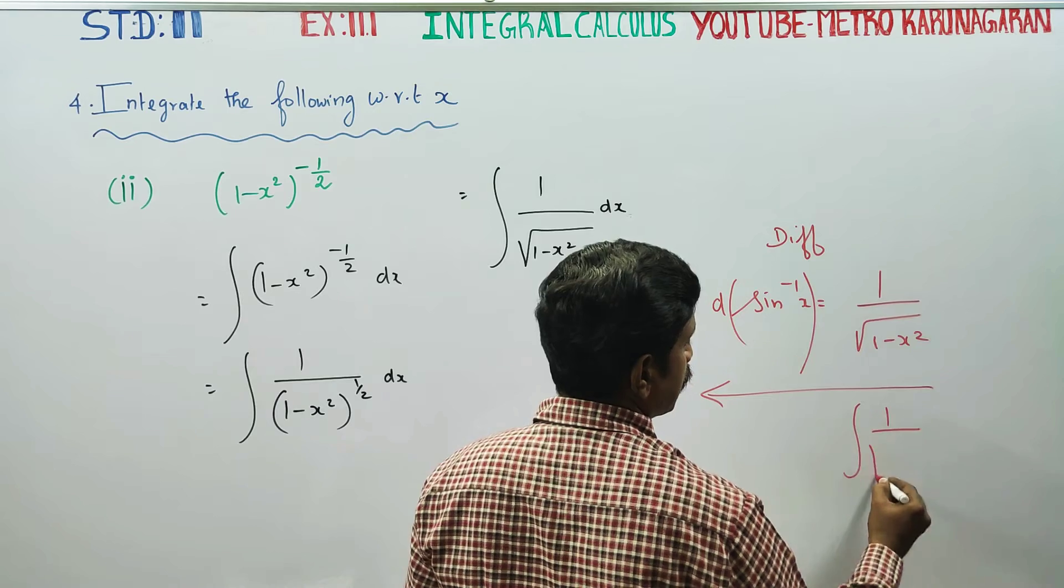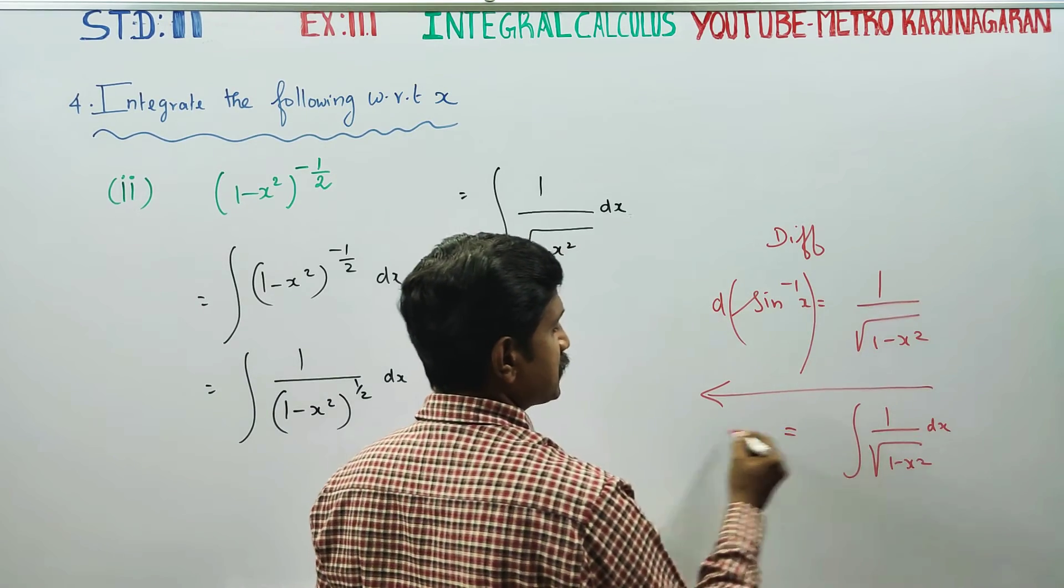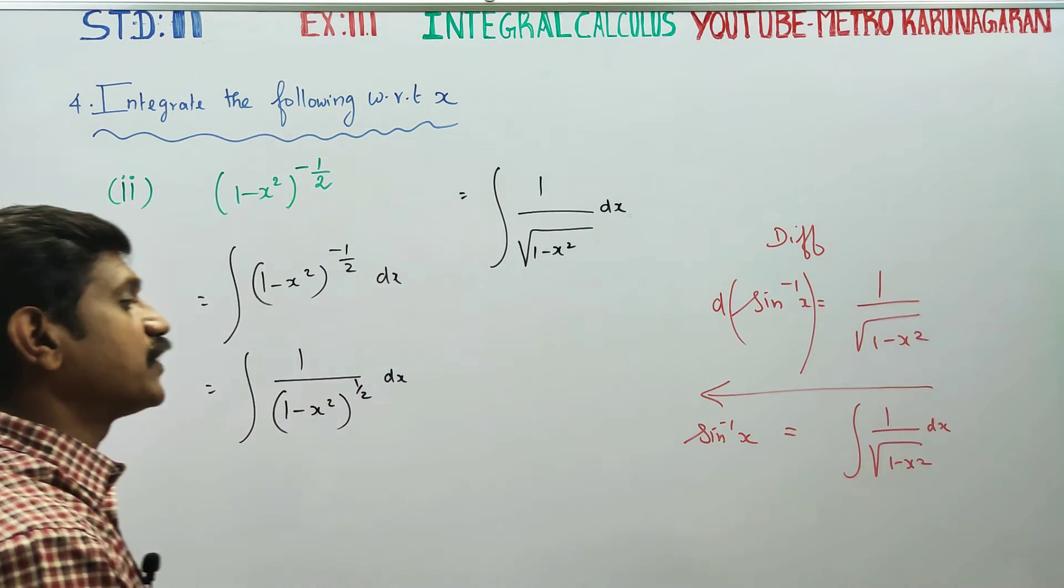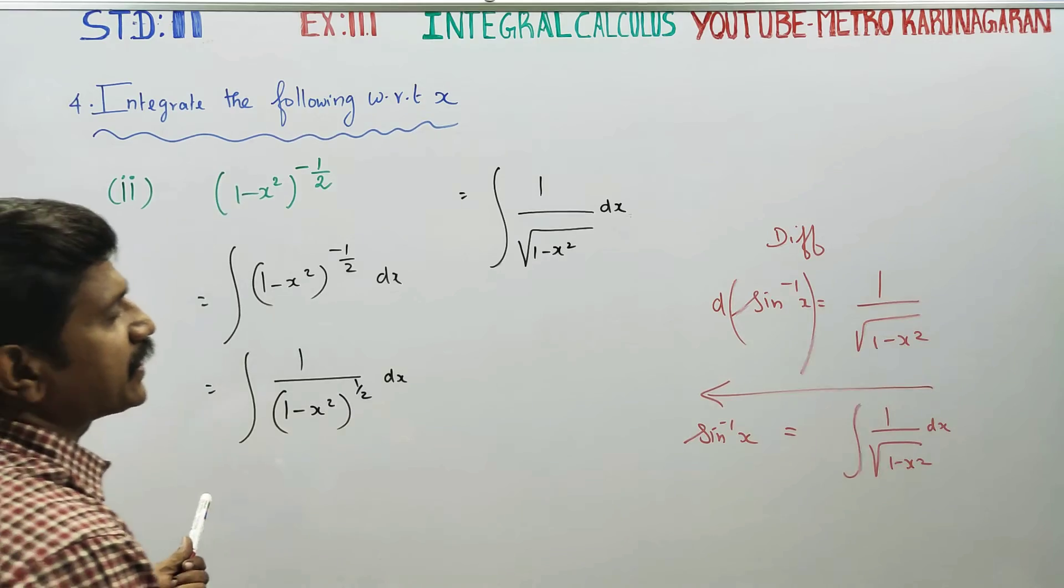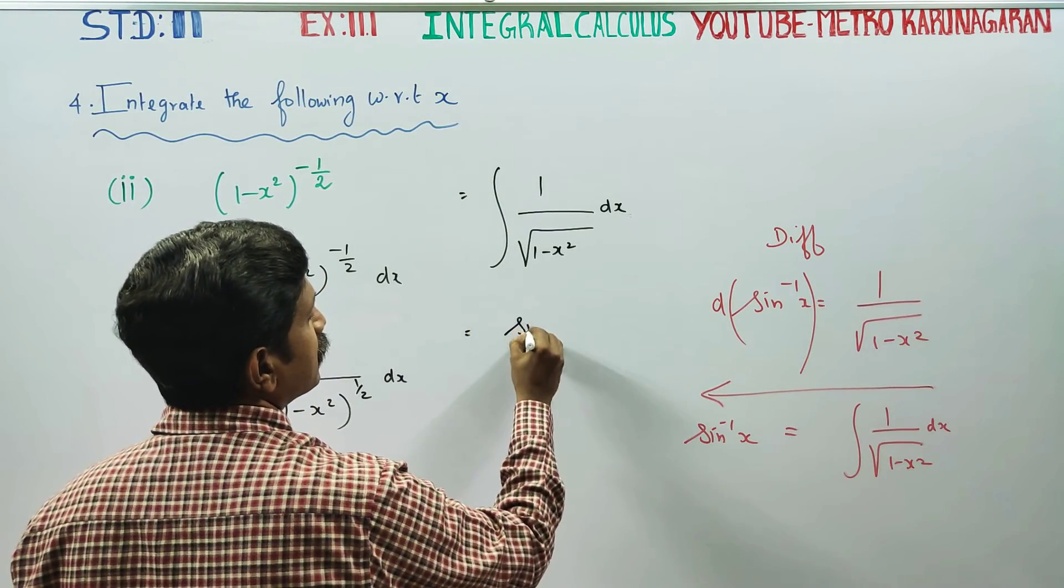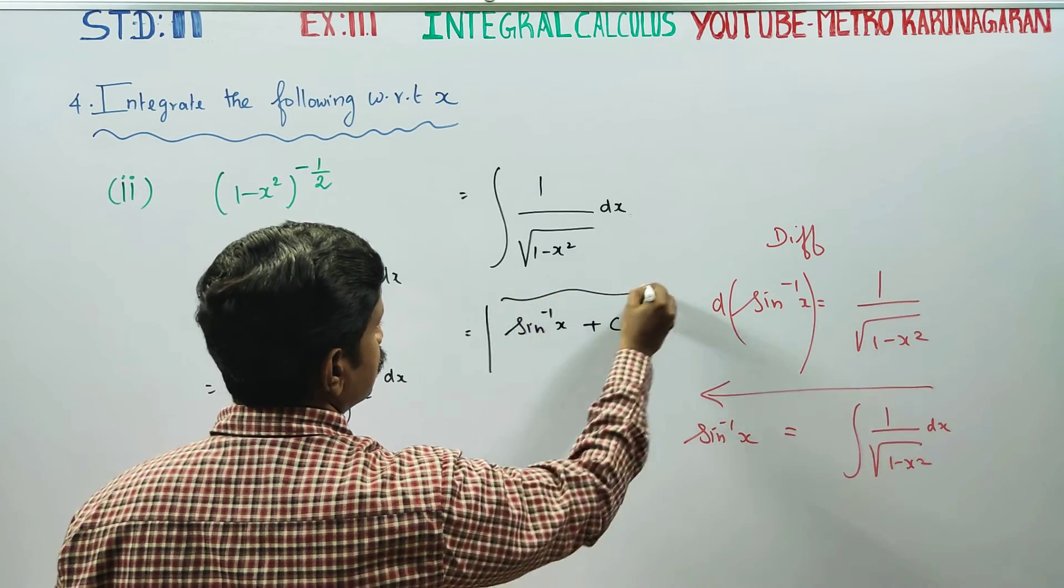Integration of 1/√(1-x²), your answer will be sin⁻¹(x) formula. Therefore, ∫1/√(1-x²) dx = sin⁻¹(x) + c is your final answer.